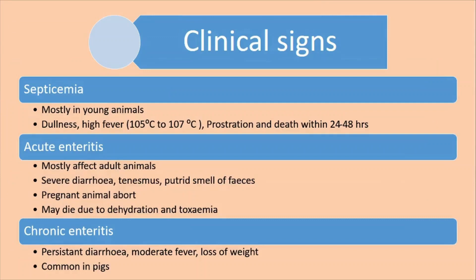The clinical signs can be divided into three forms: septicemic form, acute enteric form, and chronic enteric form. In the septicemic form, the bacteria get into the body and cause fever and other reactions. It mostly affects young animals. There will be dullness, high fever — nearly 105 to 107 degrees Fahrenheit — prostration and death within 24 to 48 hours. The toxins produced by Salmonella also cause major problems in the development of fever and shock.